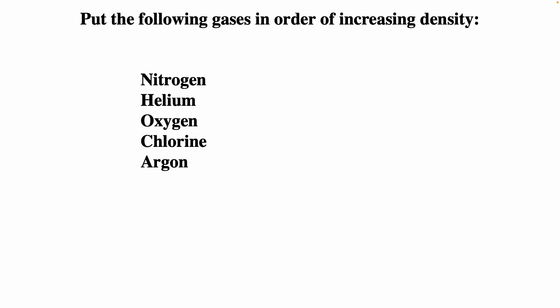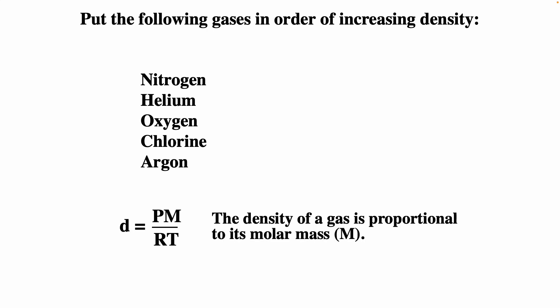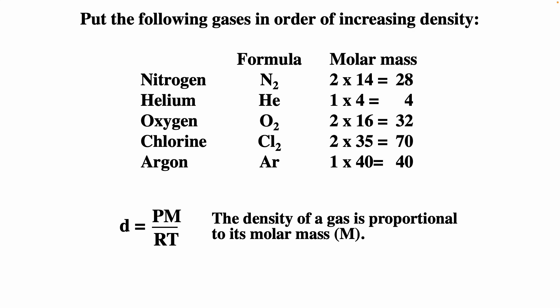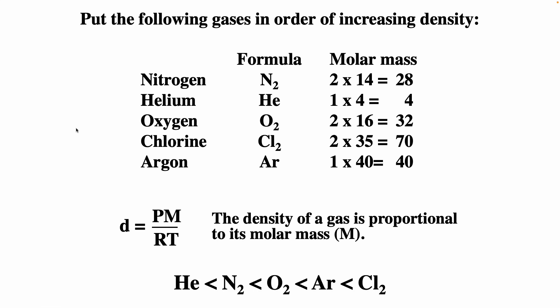You could be asked to put gases in order of increasing density: nitrogen, helium, oxygen, chlorine, and argon. Remember their formulas — nitrogen, oxygen, and chlorine are diatomic; helium and argon are not. Their molar masses are: He = 4, N2 = 28, O2 = 32, Ar = 40, Cl2 = 71. Since density is proportional to molar mass, the most dense is chlorine and the least dense is helium.